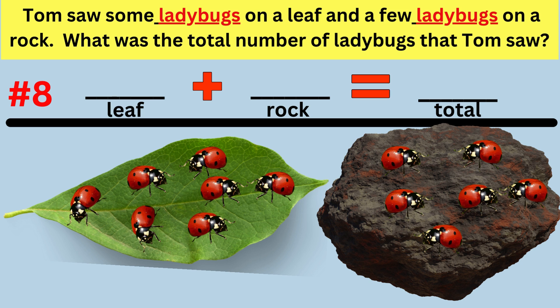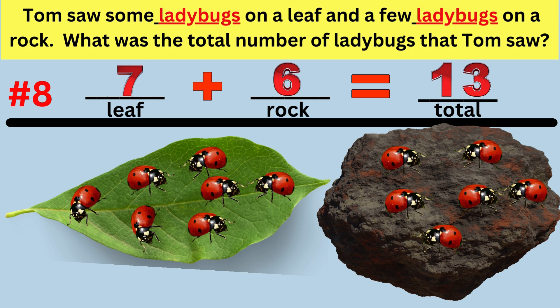Word problem number eight: Tom saw some ladybugs on a leaf and a few ladybugs on a rock. What is the total number of ladybugs that Tom saw? The answer is Tom saw seven ladybugs on a leaf and six ladybugs on a rock, so he saw a total of 13 ladybugs. The number sentence is 7 plus 6 equals 13.